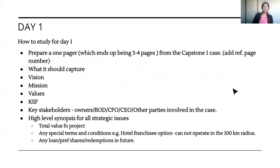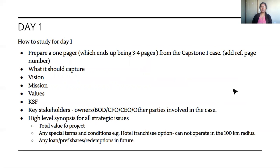Now, how to tackle these problems. The very first thing is to prepare a one-pager — though it will realistically end up being three or four pages. The Capstone 1 case is 50 pages and you can't remember everything, so make a condensed bridge version of that case. Cover what you will need repeatedly: the company's vision, mission, values, key success factors, and a SWOT analysis with specific strengths, weaknesses, opportunities, and threats for that specific company.